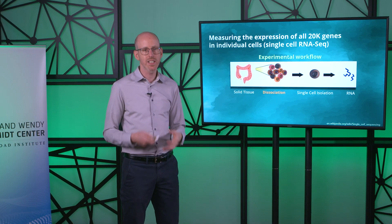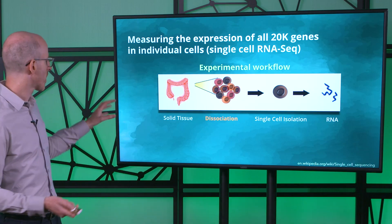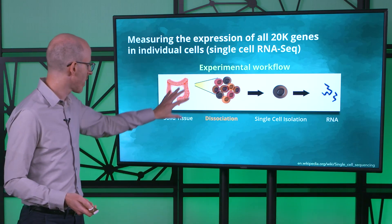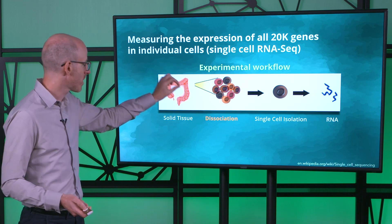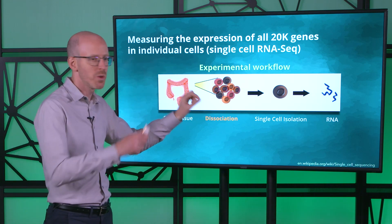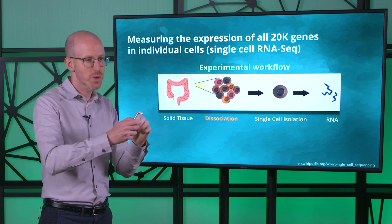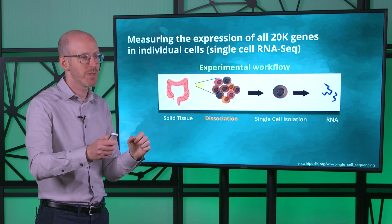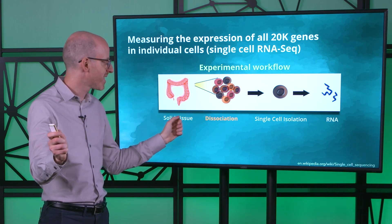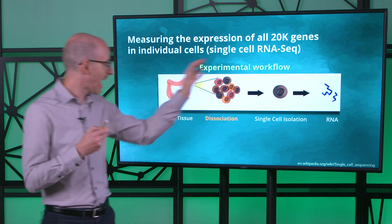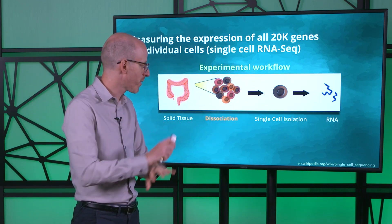So how does this work? Let's look at the experimental workflow together. We're going to start with a solid tissue, like the colon, and we're going to take a piece of the colon and dissociate it into the individual cells that make up the tissue. The tissue is being dissociated into single cells, and then we isolate those single cells, meaning we spatially separate them.